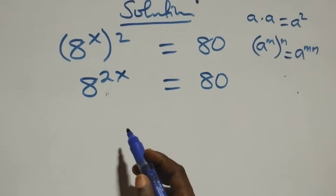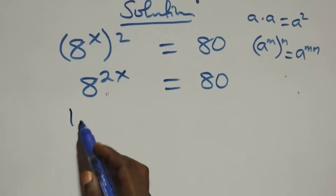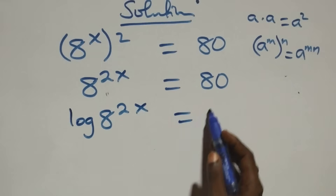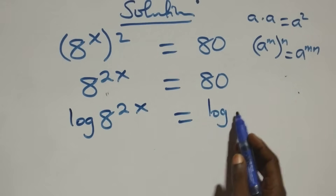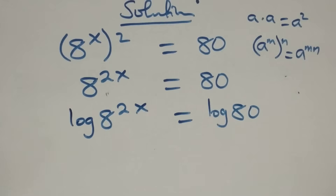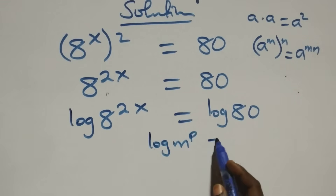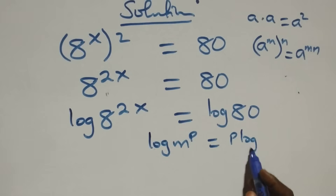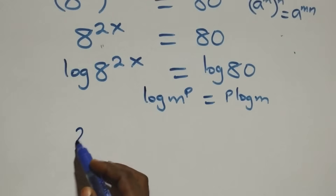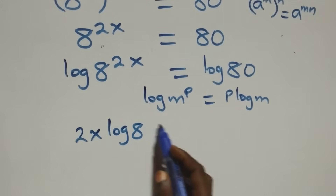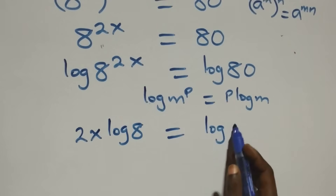The next step: we take the log on both sides. We have log of 8 raised to power 2x equals log 80. We apply the power law of logarithm: log m raised to power p is the same thing as p times log m. That is, this becomes 2x log 8 equals log 80.